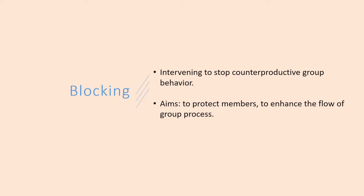Here are some examples of behavior that need to be blocked. One: bombarding others with questions — members can be asked to make direct statements that involve expressing the thoughts and feelings that prompted them to ask their questions. Two: indirect communication — if a member talks about another member who is in the room, the leader can ask the person to speak directly to that person. Three: storytelling — if lengthy storytelling occurs, a leader can intervene and ask the person to say how this relates to the present feeling and events.